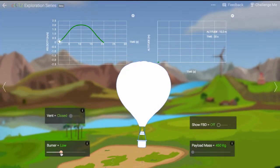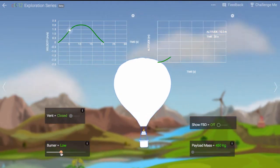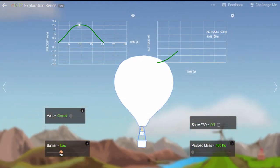Let's start by seeing what happens when we put the burner on low. The hot air balloon begins to rise, at first slowly, and then faster and faster.